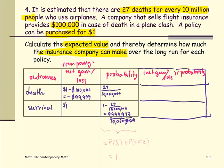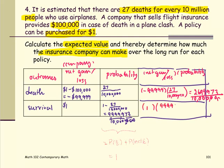For the case of death, we multiply negative 99,999 by 27 over 10 million, and the number comes out to be negative 2,699,973 over 10 million. The second number — the product for the survival case — is 1 times 9,999,973 over 10 million, giving us 9,999,973 over 10 million.